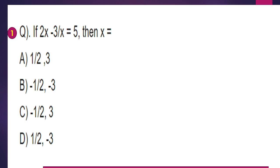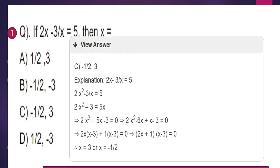First problem: if (2x minus 3) by x is equal to 5, then x is equal to? By cross multiplication, we get 2x squared minus 3 equals 5x, so 2x squared minus 5x minus 3 is equal to 0.